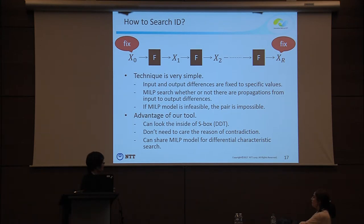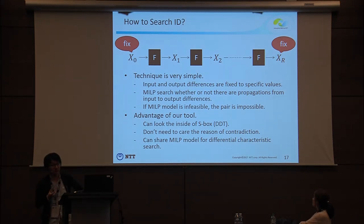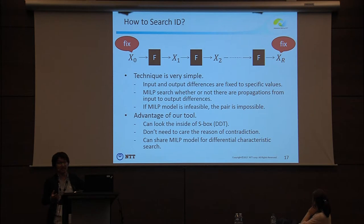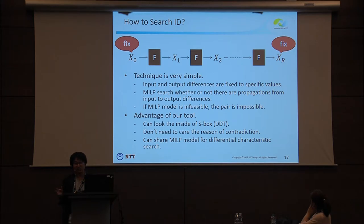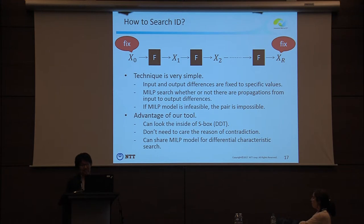The advantages of our tool are significant. First, we model the differential distribution table, so we can look at the inside of the S-box. Unlike the UD-method, we don't need to manually identify the reason for contradiction. Also, the MILP model is exactly the same as for evaluating differential characteristics, so in the design process we can share the MILP model for both differential characteristic search and impossible differential search.